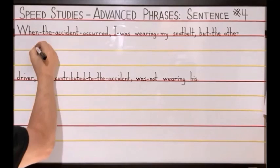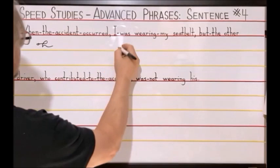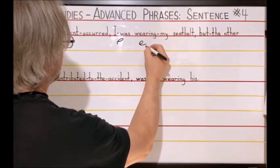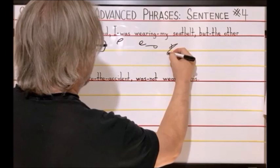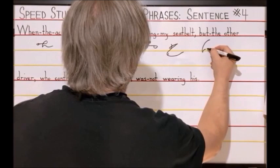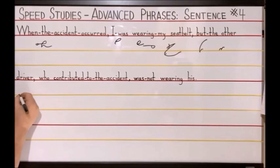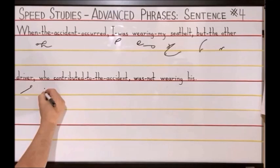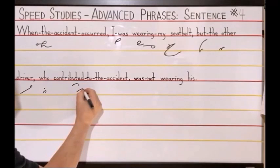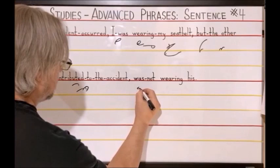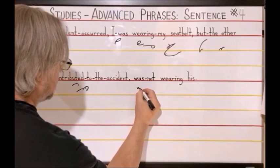When the accident occurred: E-N-A-S-K-R, I was: A-S above the line, wearing my: A-R-M-A, seatbelt: S-E-T-B-E-L-T, but the: B-T-H, other: U-T-H, driver: the D-R-E-E, who: dot for the H sound U, contributed to the accident: K above the line T-U-T-H-A-S, was not: O-S-N-D blended in, wearing: A-R dot for the I-N-G, his: S, period.